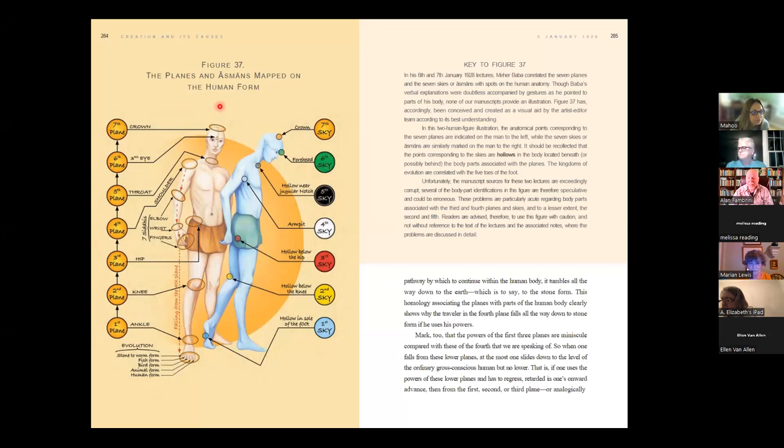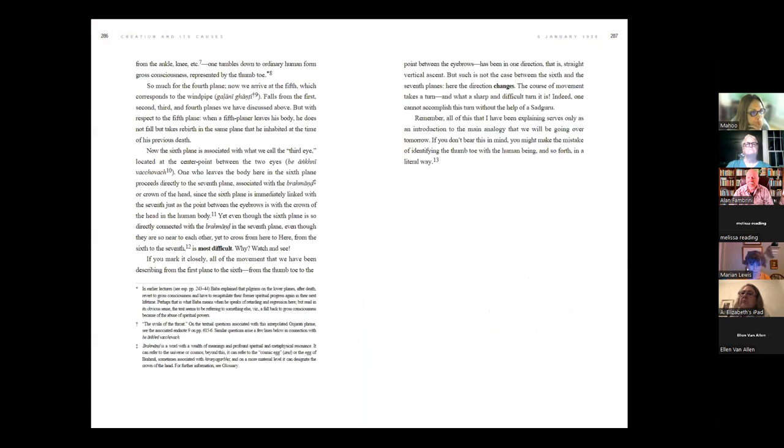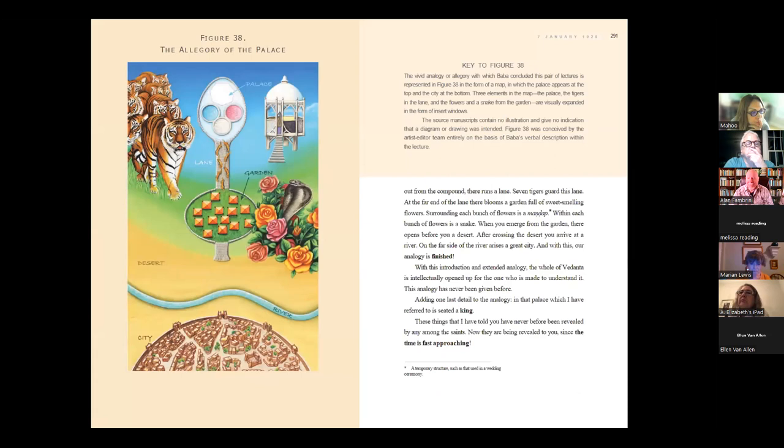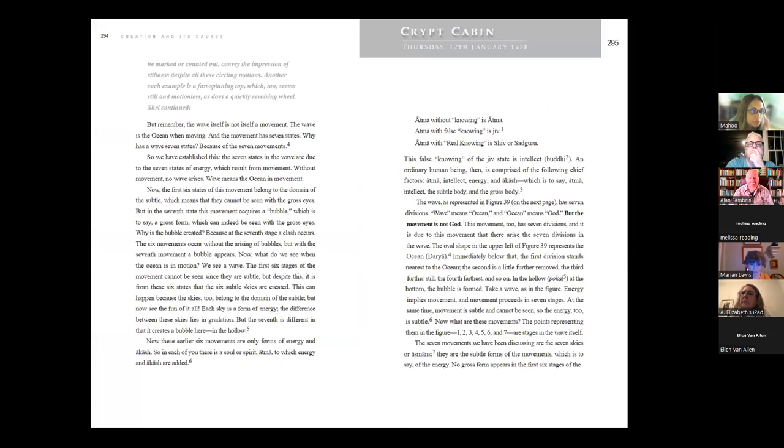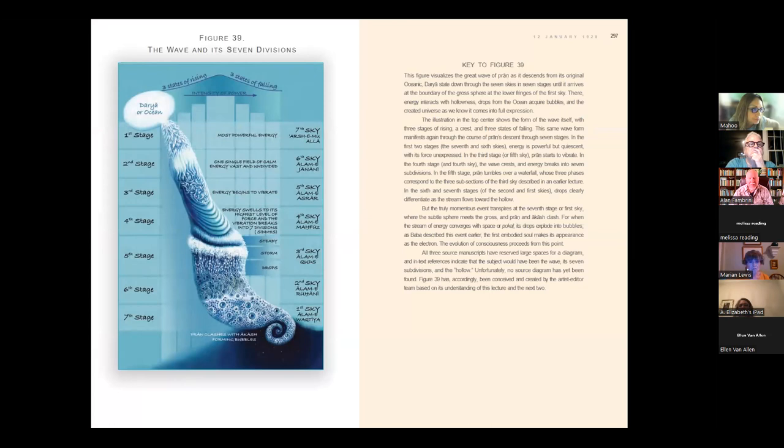The next one is kind of a companion piece to this one we just read. This one was on the planes and their correlations with parts of the human body. The next one we'll talk about these seven skies, the Asmans, and their corresponding correlations with parts of the human body. Baba throughout these two lectures has been building towards an analogy. Then the last three turn to a totally different topic, which is the descent of Pran from the seventh plane down to the gross plane. It's a very strange ending, and then the series concludes.